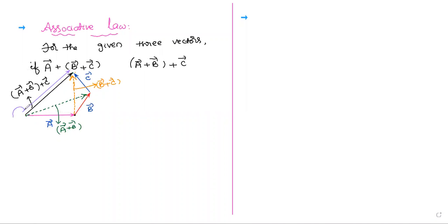Look there now — this is A-bar plus B-bar, and that is added with C-bar. Both you are getting in the same direction and same length, along the black line. I am getting the same direction, same length, same magnitude, same direction. So finally I conclude here.